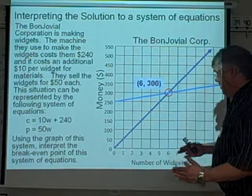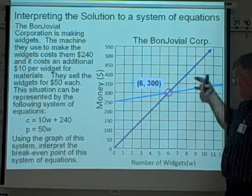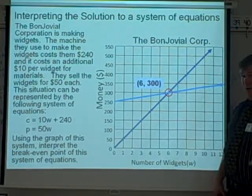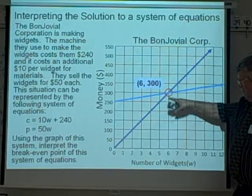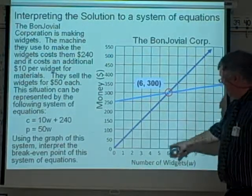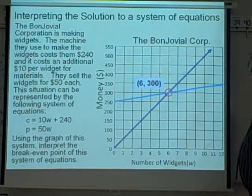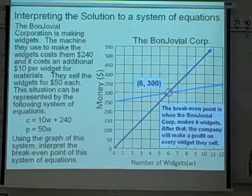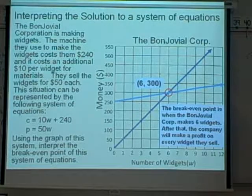But that's just the coordinate. We're asked to interpret the break-even point. Well, remember, break-even point is where these guys are going to be matching the same, where the money they spend is going to equal the money they take in. That was one of the vocabulary words there. If you pause the video, you saw that. So that point is the solution. It's going to be when they make 6 widgets for $300. The break-even point is when BonJovial makes 6 widgets. After that, the company will make a profit. They will make a profit on every widget after that that they sell.